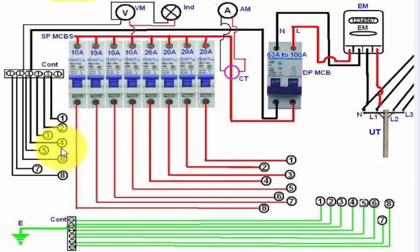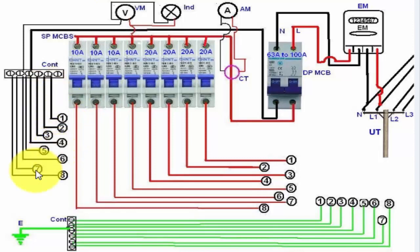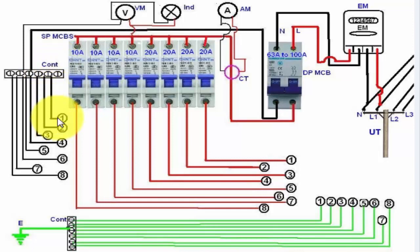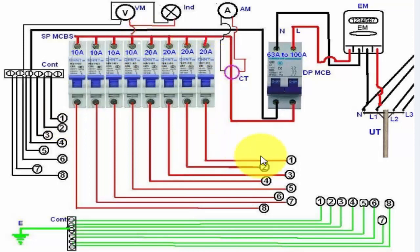Here I am numbering the total loads, which are one through eight. The black color wire is called neutral. The black neutral wire goes to each load, and from the MCB circuit breakers the phase wire also goes to the same point for each load.